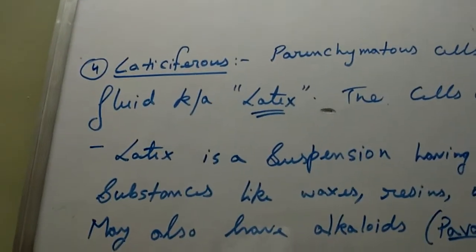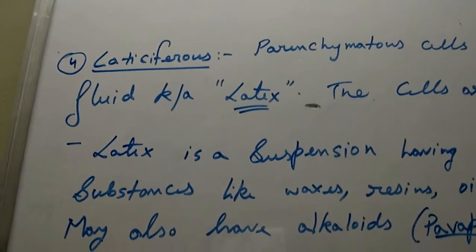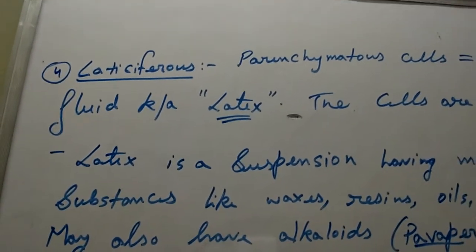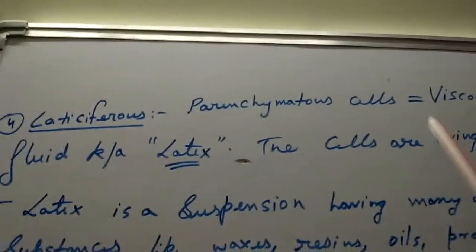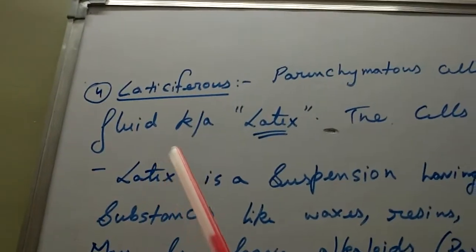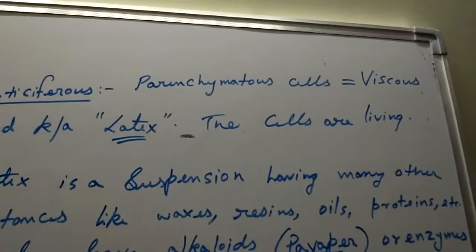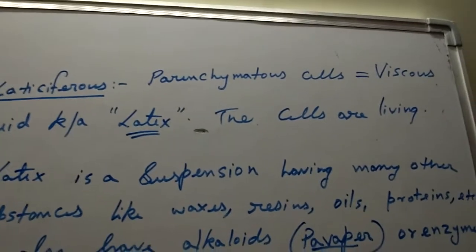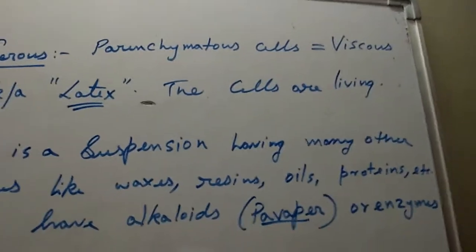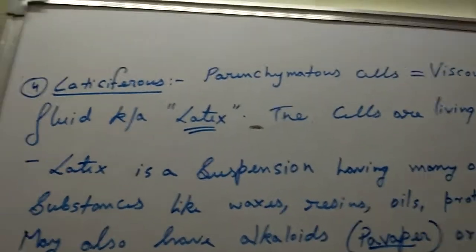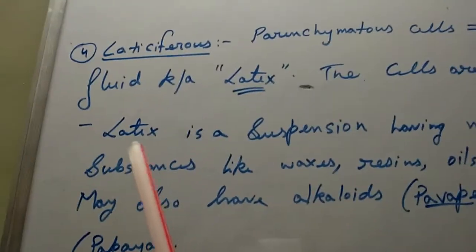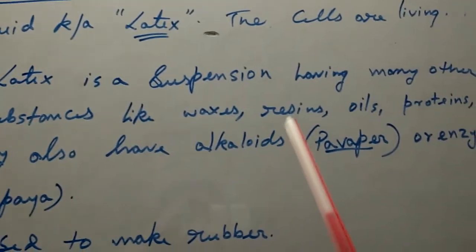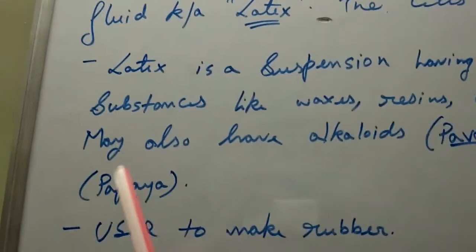The last type of internal secretory structures are laticiferous tissues or laticiferous cells. These are parenchymatous cells and their secretion is viscous in nature — very thick, very dense, not very fluid. This secretion is commonly known as latex. The cells are living.